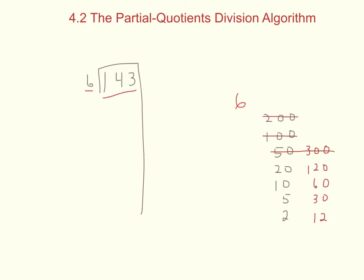I don't need to use 50, 100, or 200. Now that I have my numbers, I come back to my problem and start finding partial quotients. The first number I want needs to be as close to the dividend as possible. The biggest number on the chart close to 143 is 120, so I write 120 here. Six times 20 equals 120, so 20 is my first partial quotient.